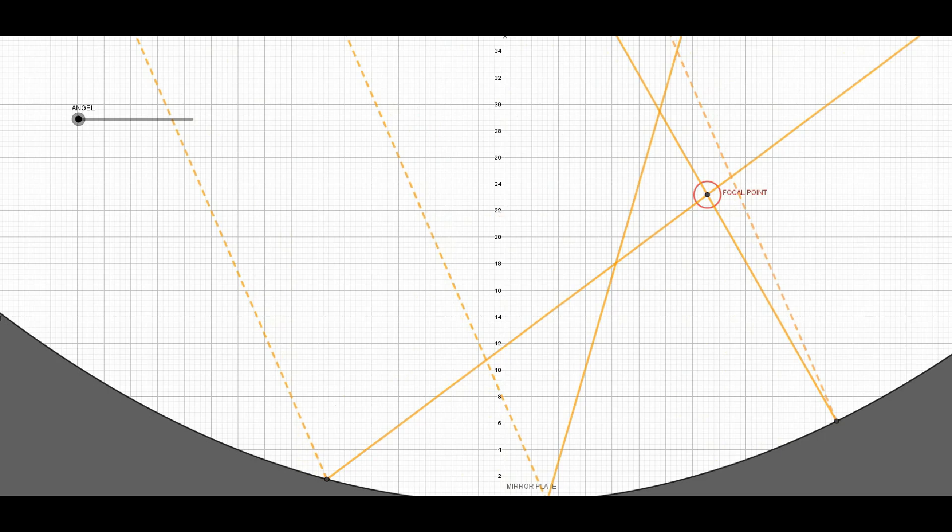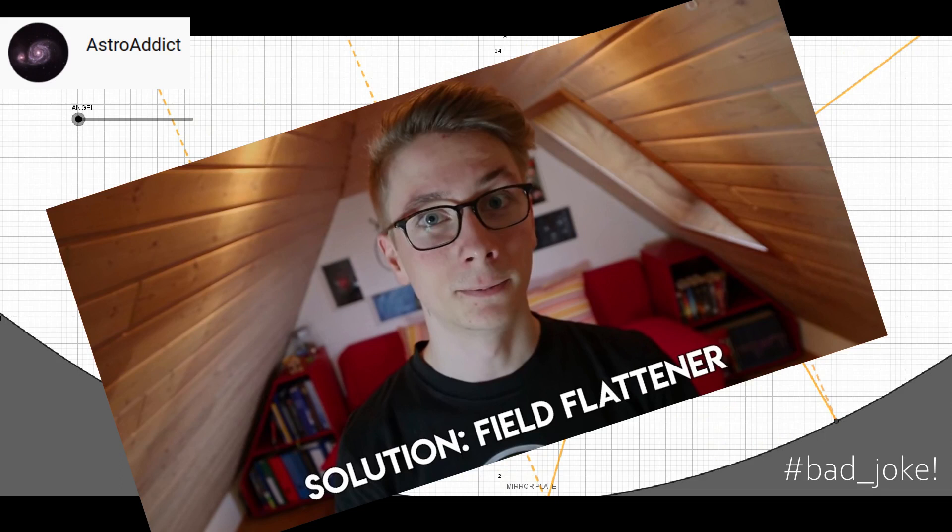If you want to know more about lens scope errors, try this link above or in the description below. Tim from AstroAddict did a great job on explaining the main distortions of refractors. He's more the lens guy and I'm the mirror, whatever, just watch it.